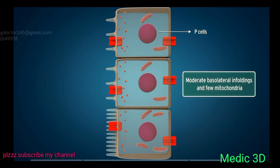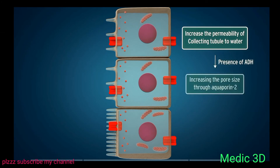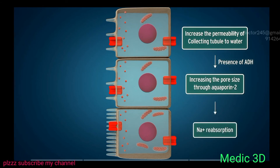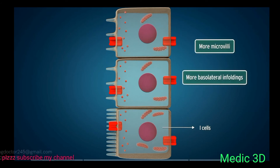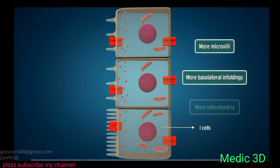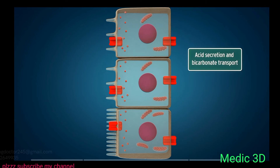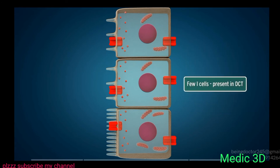The collecting duct epithelium contains two types of cells: principal cells (P cells) and intercalated cells (I cells). P cells are more numerous and have moderate basolateral infoldings and few mitochondria. P cells increase the permeability of the collecting tubule to water in the presence of ADH via aquaporin-2, and are also involved in sodium reabsorption. I cells contain more microvilli, more basolateral infoldings, and more mitochondria; they are involved in acid secretion and bicarbonate transport, thus responsible for acidic urine. A few I cells are also present in the DCT.